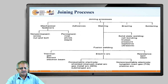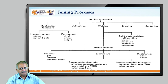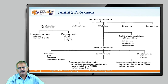If we see the joining processes available to us, there are mechanical fasteners through which non-permanent and permanent joining is possible. Adhesives are nowadays very commonly deployed, but welding gives very quality joining. Today's focus is on fusion welding. In fusion welding, there are three options available: one is gas welding, another is electric arc welding, and the third type is electric resistance welding.